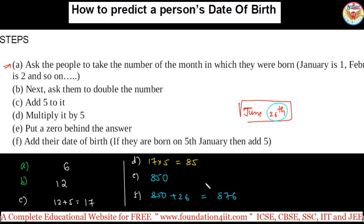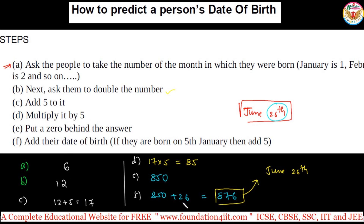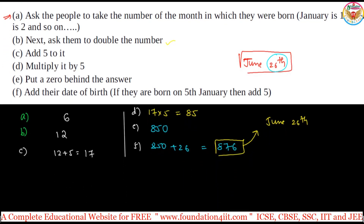The person will reveal to us the answer, which is 876. By taking this number, we have to immediately say it is June 26th. These are the 6 steps in total. To summarize: take the month number, double it, add 5, multiply by 5, put a 0 behind the answer, and add the date of birth. The person got 876 — now how do we find that it is exactly June 26th?